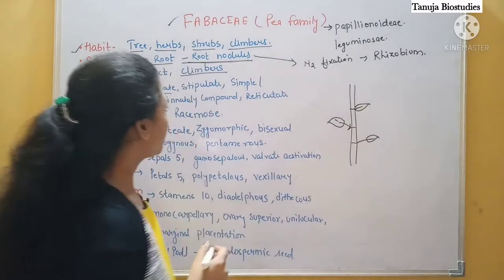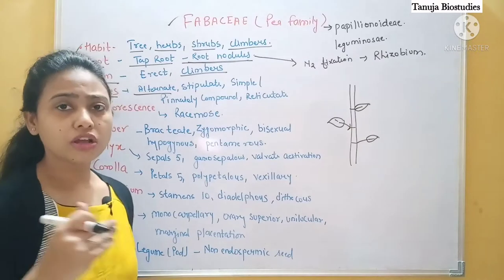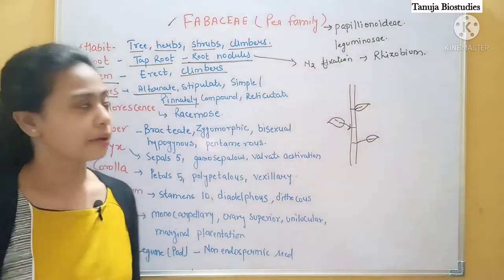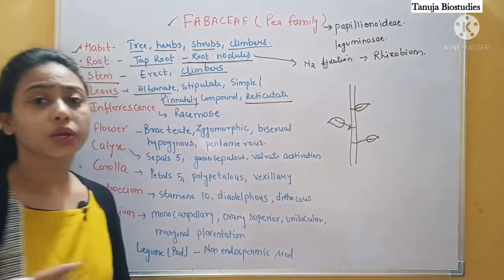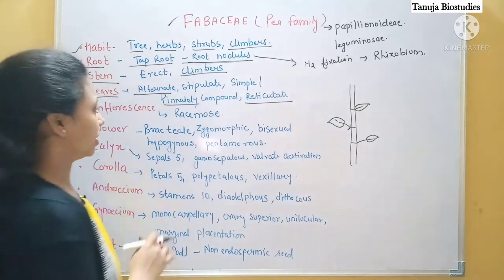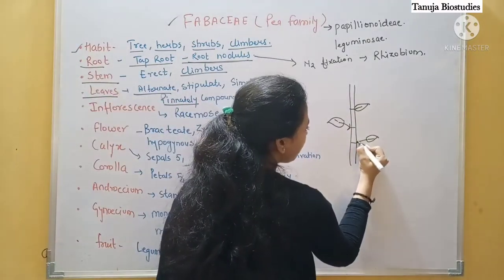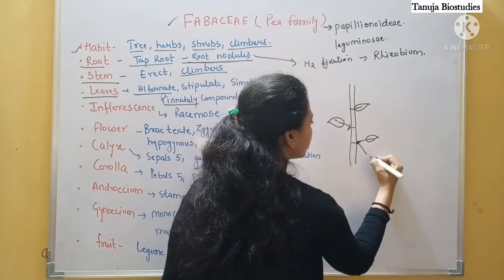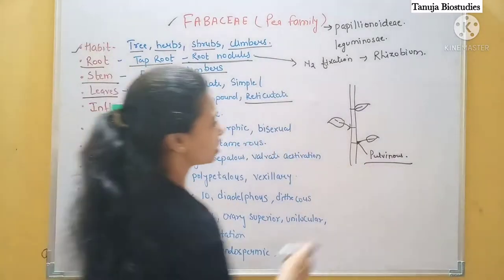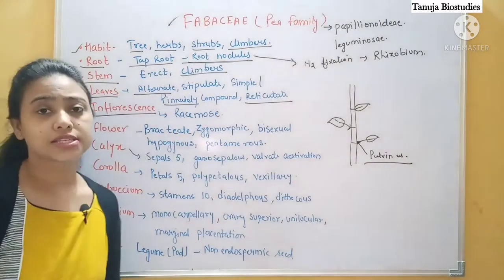The leaves can be simple or pinnately compound. In compound leaves, both palmate and pinnate types occur, but pinnately compound is characteristic here. The venation is reticulate — the vein distribution is reticulate, not parallel. One more thing: the leaf base shows swelling, which we call the pulvinus — P-U-L-V-I-N-U-S. So this is all about the leaf.